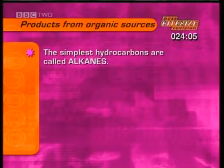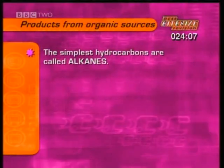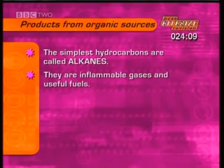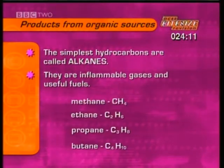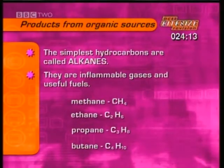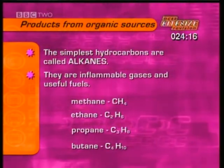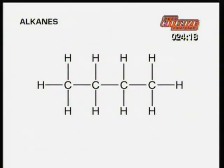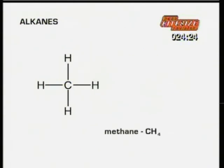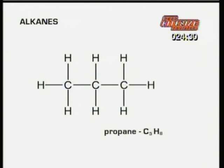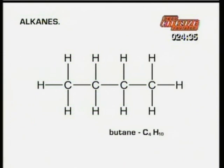The simplest forms of hydrocarbons are called alkanes. They're all inflammable gases and useful fuels, such as methane, ethane, propane and butane. All alkanes have a central chain of carbon atoms, surrounded by hydrogen atoms. This is methane, CH4. Ethane, C2H6. Propane, C3H8. Butane, C4H10.